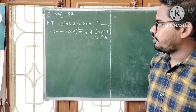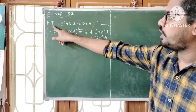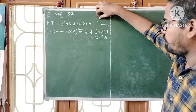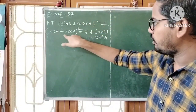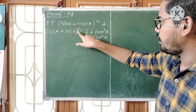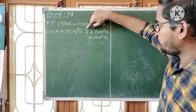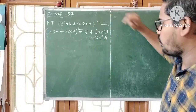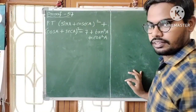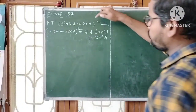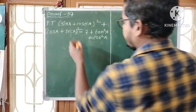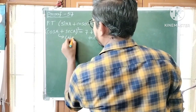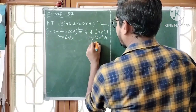Proof number 57. Prove that (sin a + cosec a)² + (cos a + sec a)² is equal to 7 + tan²a + cot²a. So we have to prove LHS equals to RHS. This is LHS and this is RHS.